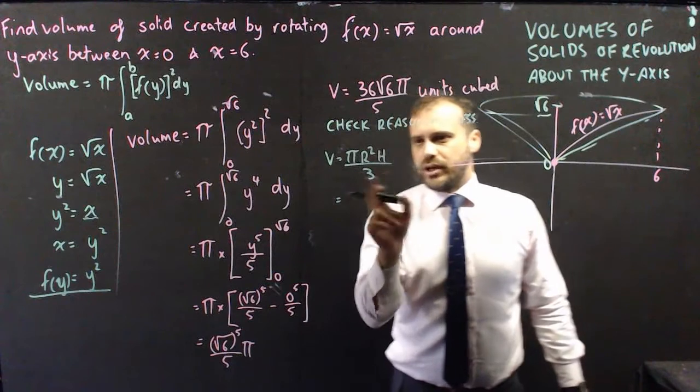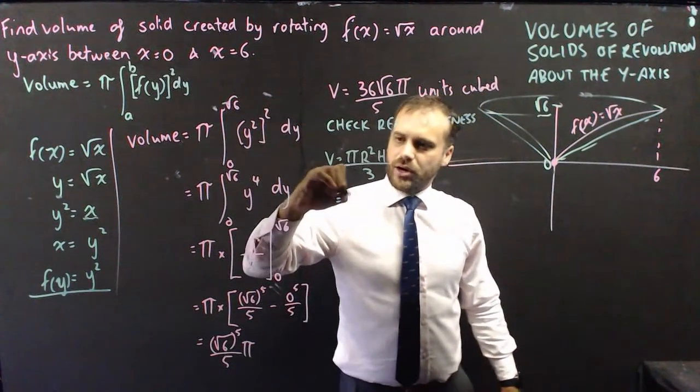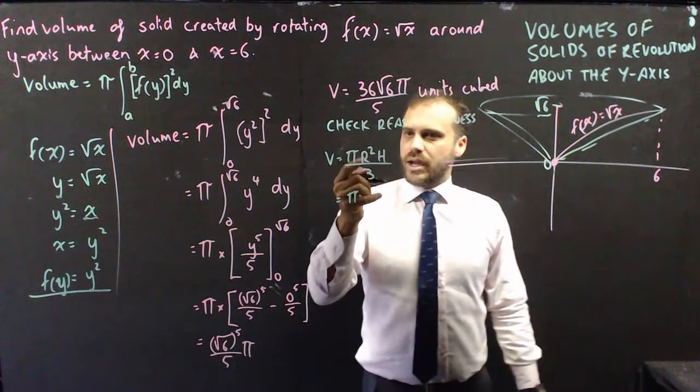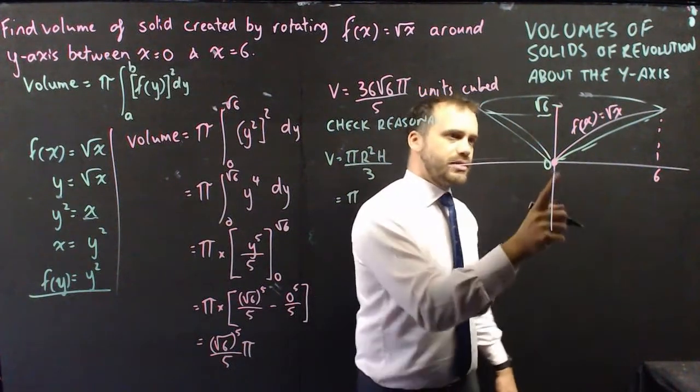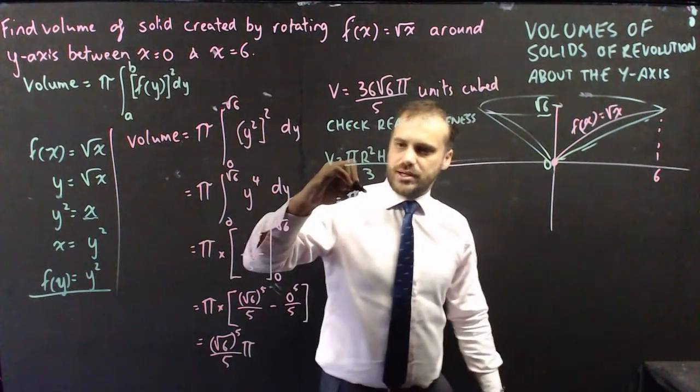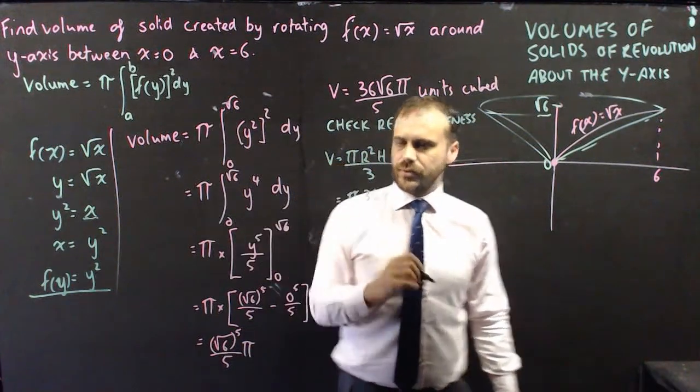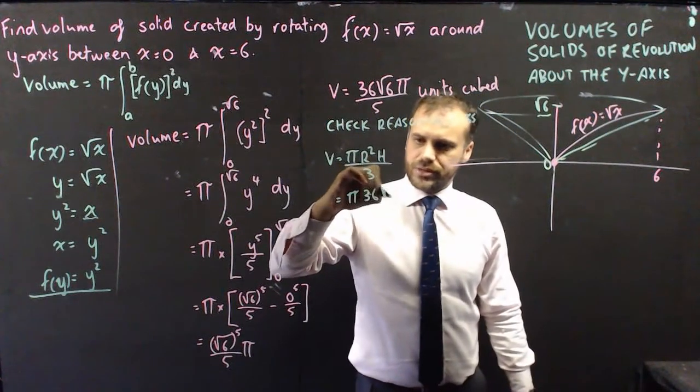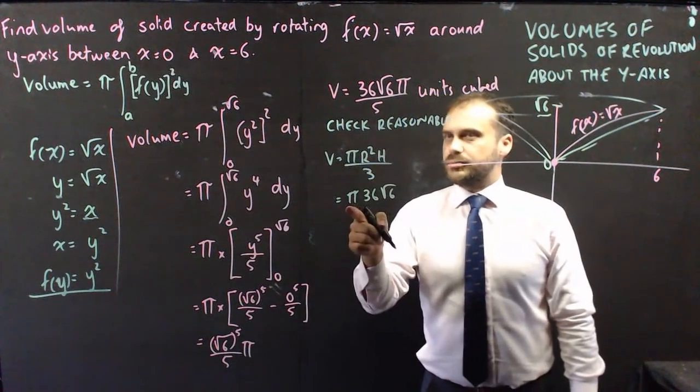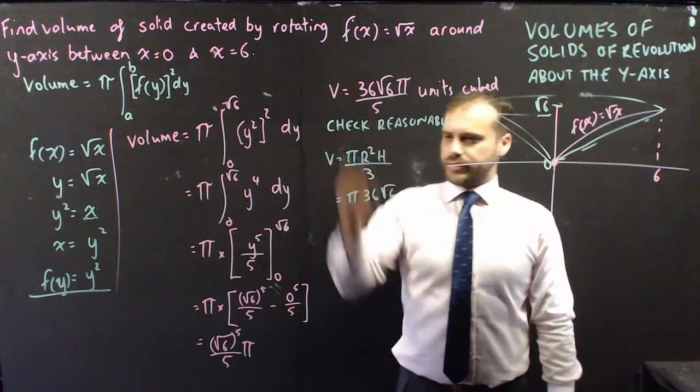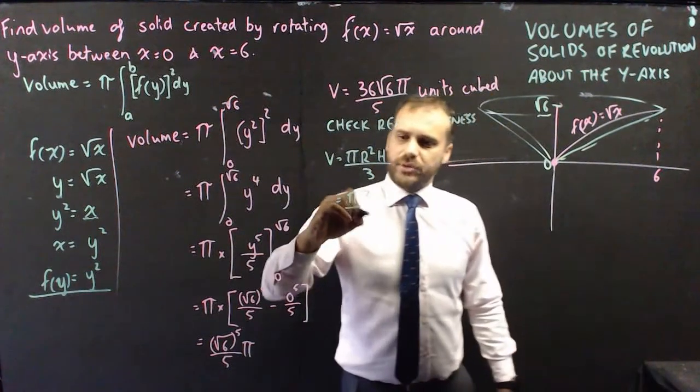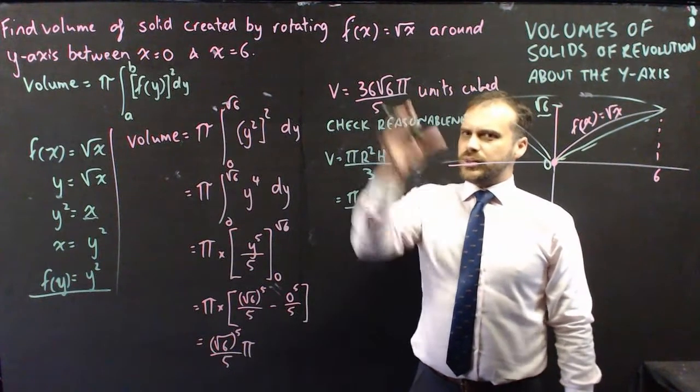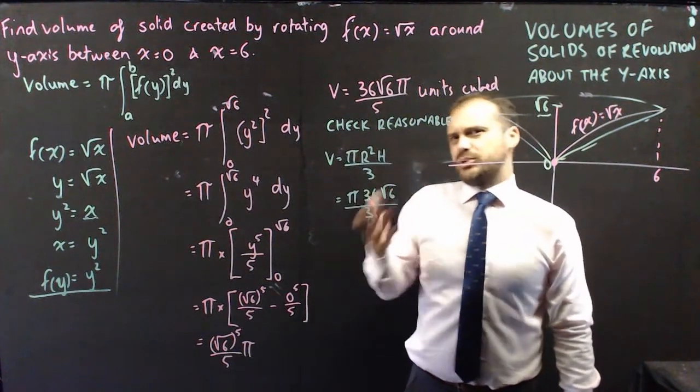Volume equals pi r squared height over 3. Pi, we had pi in our thing here, that's not unsurprising. r squared, well, the radius is 6, so 6 squared is 36. We have a height here of root 6, 36 root 6 pi, check that out. And then we have a divide by 3. You can see, well, what are these volumes in terms of actual numbers?